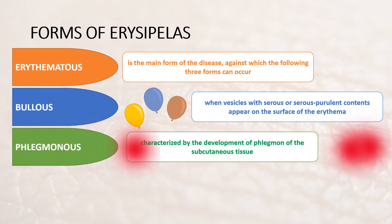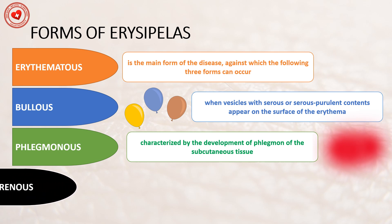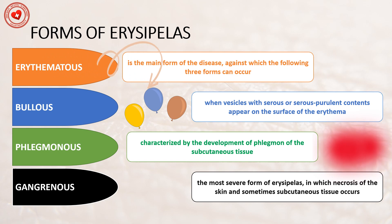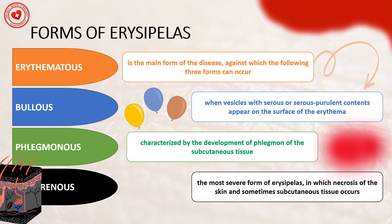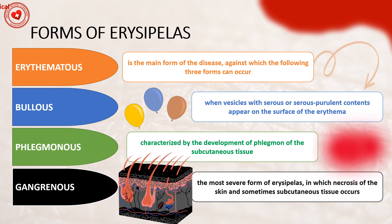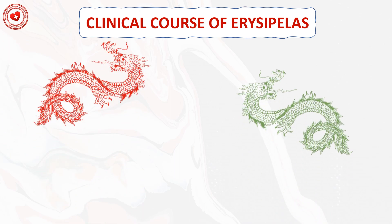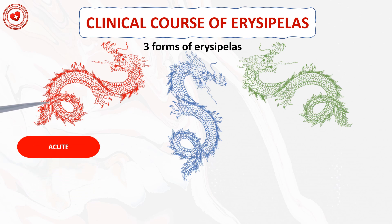Gangrenous: the most severe form, in which necrosis of the skin and sometimes subcutaneous tissue occurs. According to clinical course, three forms of erysipelas are distinguished.